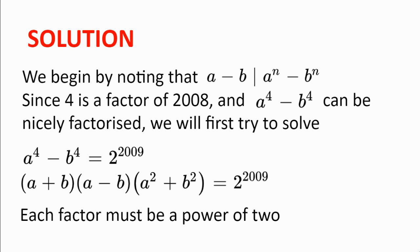So we'll first try to solve a to the power of 4 minus b to the power of 4 equal to 2 to the power of 2009. We can factorize the left hand side to give a plus b, multiplied by a minus b, multiplied by a squared plus b squared, equal to 2 to the power of 2009. Since the right hand side has only the prime factor 2, the left hand side must also have only the prime factor 2 by unique prime factorization, and so each factor on the left hand side must be a power of 2.